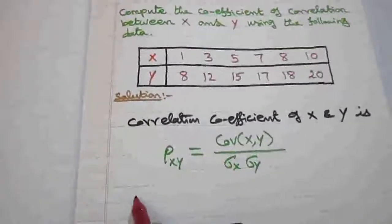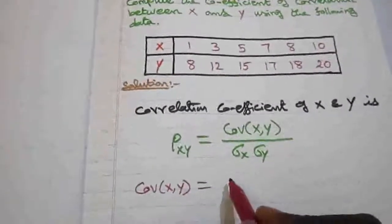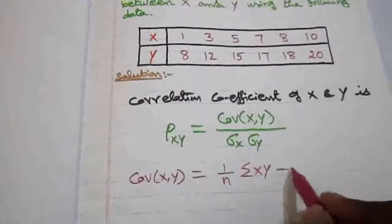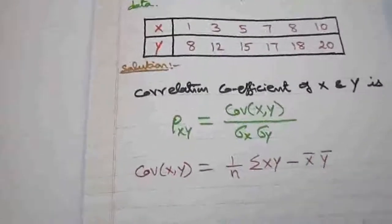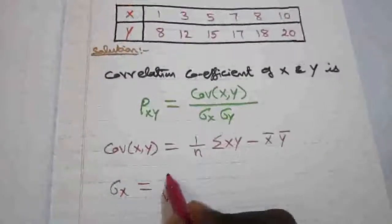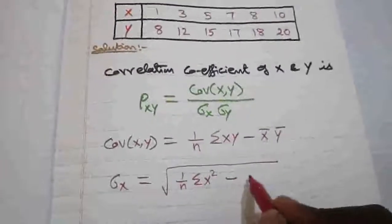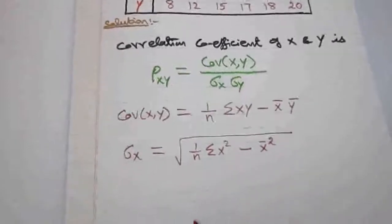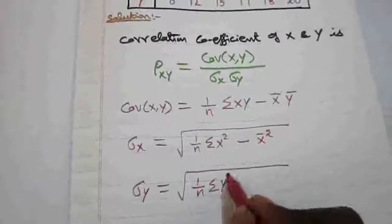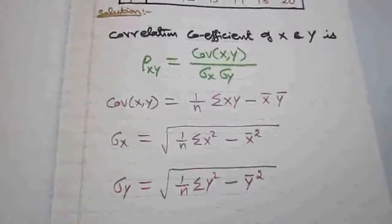Where covariance of x, y is (1/n) · Σxy minus x̄ · ȳ. And σx is the square root of (1/n · Σx² minus x̄²). Similarly, σy is the square root of (1/n · Σy² minus ȳ²). These are the formulas for the correlation coefficient between two discrete random variables.